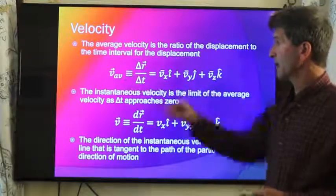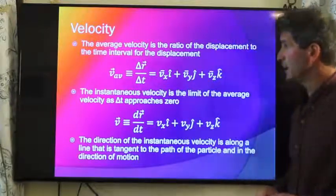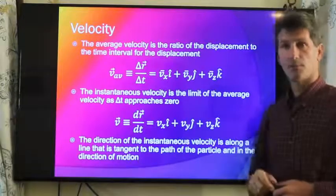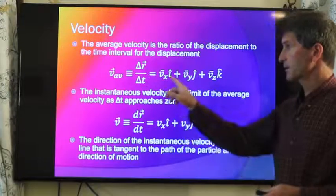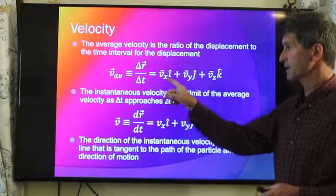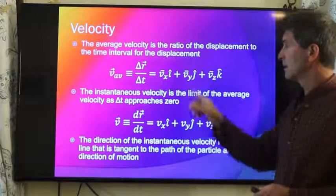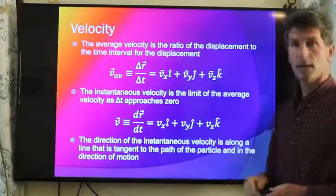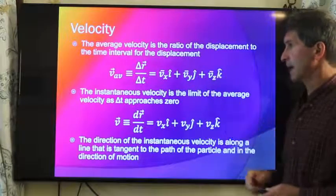So when we're looking at the average velocity, it will be the average component in the x direction. I hat indicates that vx in the x direction, vy j hat plus vz k hat.